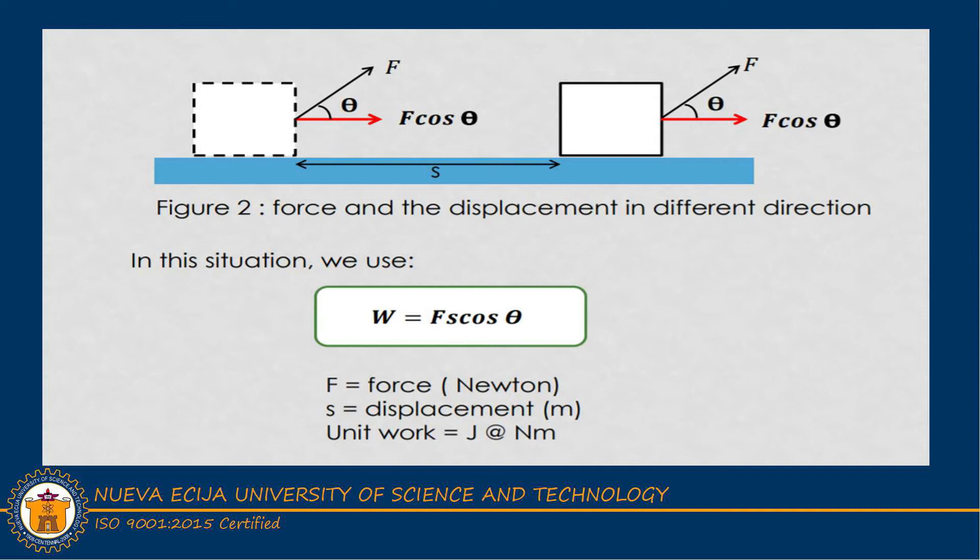Now, sometimes the force that you apply to an object won't be exactly the same direction as the direction in which the object is moving. So if you try to drag the box with your hand higher than the box so that the rope was at an angle to the floor, in that case, the box will move parallel to the floor but the force will be at an angle to it.